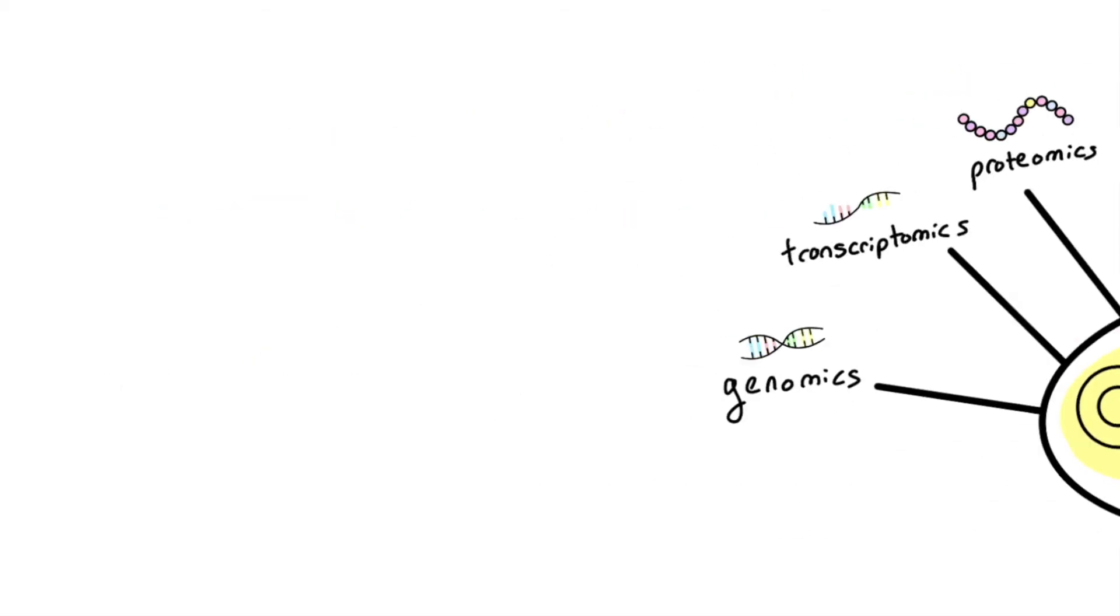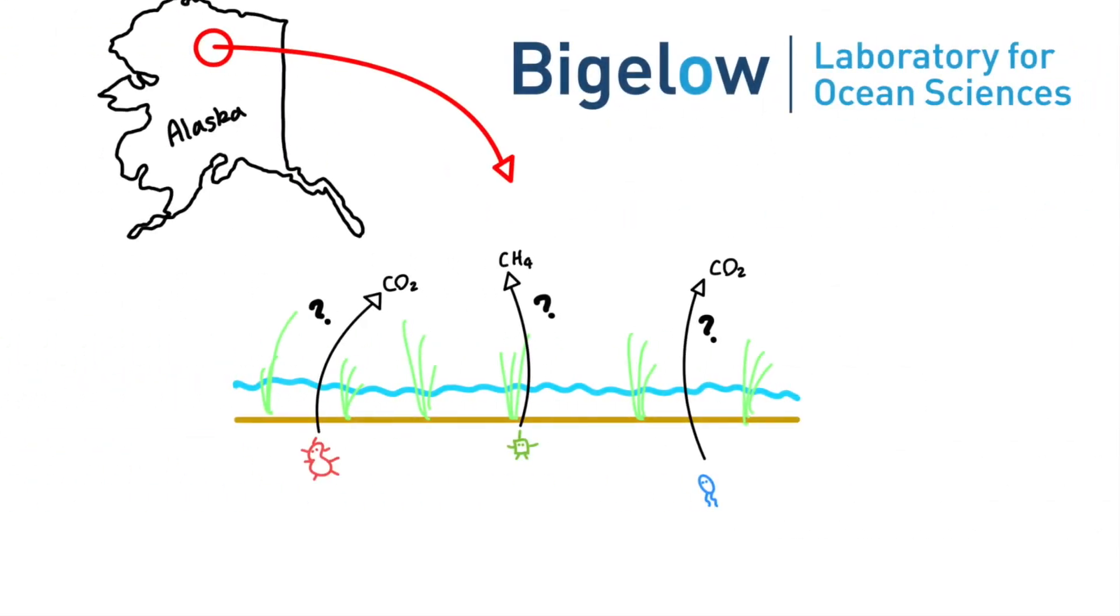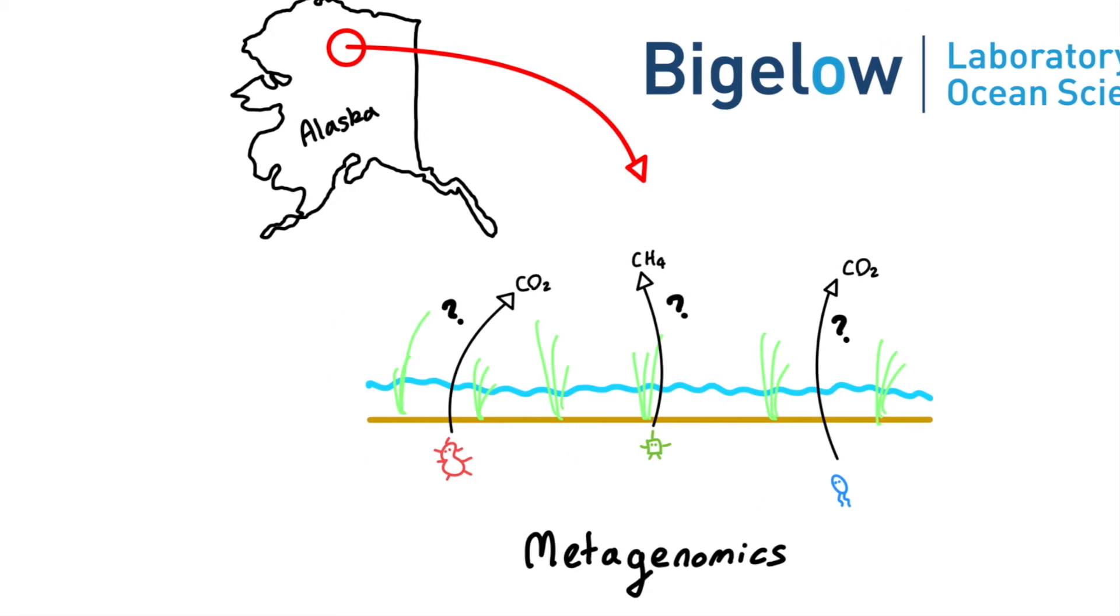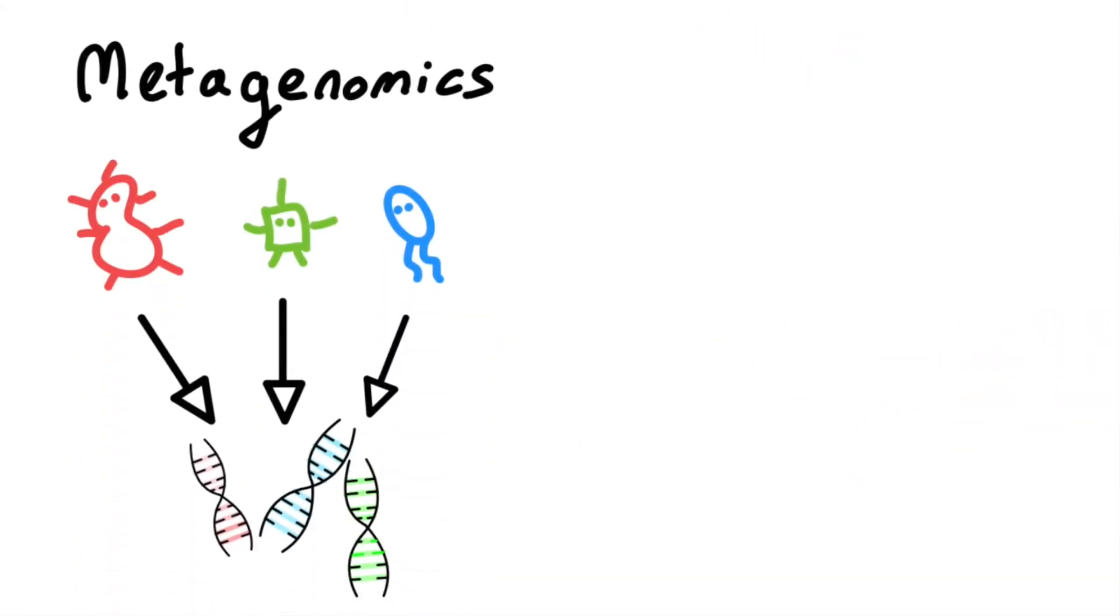My project at the Bigelow Laboratory for Ocean Sciences investigates how Arctic bacterial communities influence climate change through this omics method called metagenomics. In environmental metagenomics, we often work with soil or water samples that could contain many different kinds of bacteria.